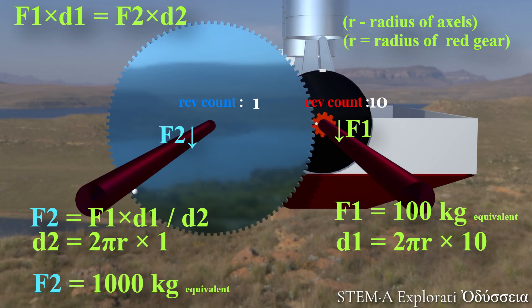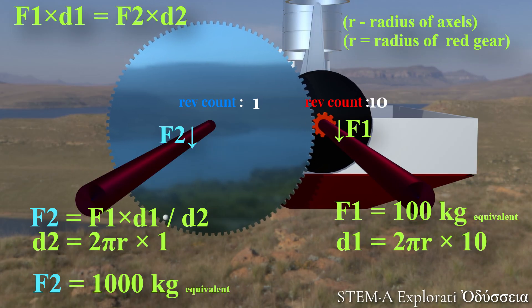Thus, we see that above reduction gear has increased the torque by 10 folds. And this was why we managed to lift the 1,000 weight using this setup.